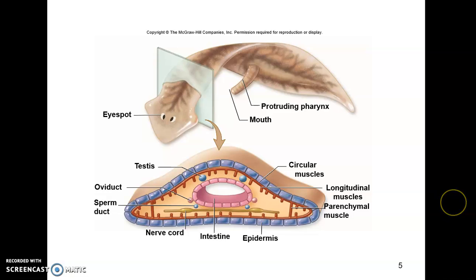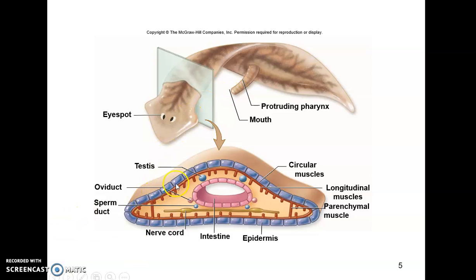This diagram from the book shows some of the major structures of a turbellarian flatworm. We've got the anterior end with the eye spots, and the pharynx that protrudes out of that single opening to the digestive cavity. Through cross-section, you can see that the organism does have three germ layers — it is triploblastic — but it is also acoelomate, so there is no internal body cavity except for that digestive tract.